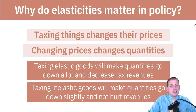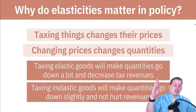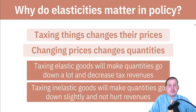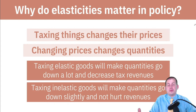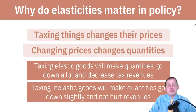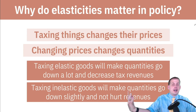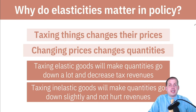When you tax inelastic goods, quantities go down just a little bit, but it maintains fairly stable revenue streams. This is why property taxes are so popular — when your property tax goes up, you're very unlikely to just pick up your house and move, because it's really hard to move and sell. So you're very inelastic when it comes to property taxes, and local governments rely heavily on them because of that.